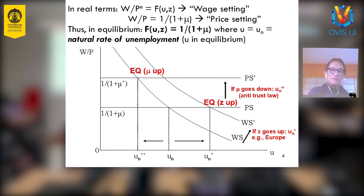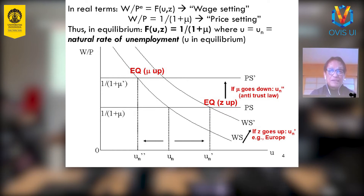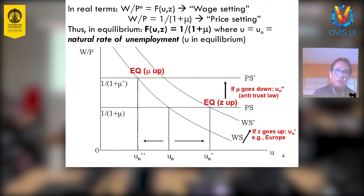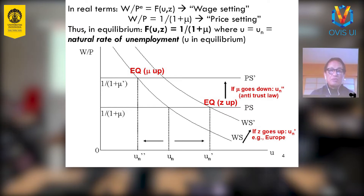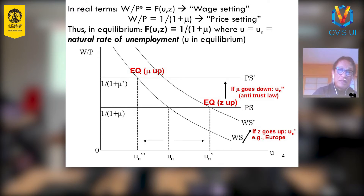Let's continue. The first equation is called the wage-setting equation and the second equation is called the price-setting equation. In equilibrium, you equate the wage-setting equation and the price-setting equation. The left-hand side comes from the wage-setting equation and the right-hand side comes from the price-setting equation. When you equate them, you essentially have equilibrium in the labor market.